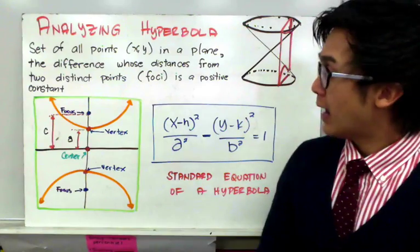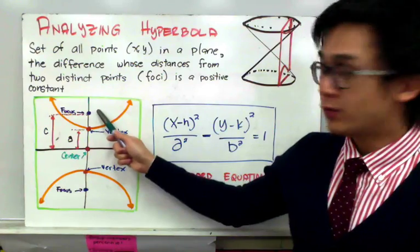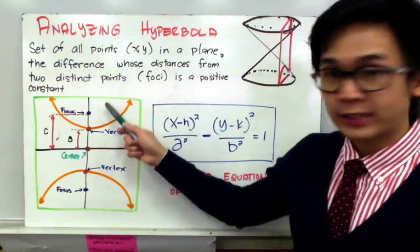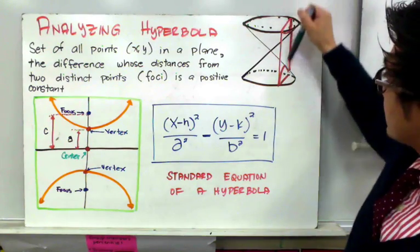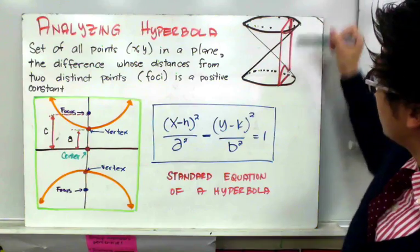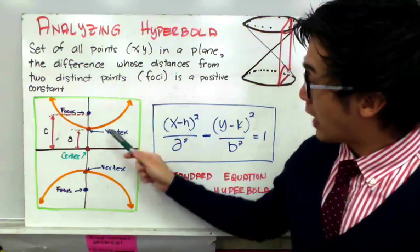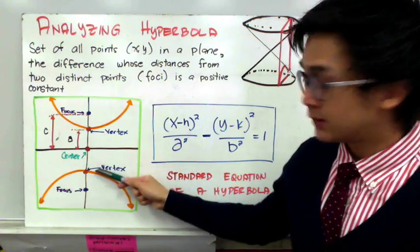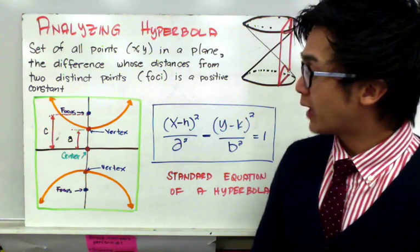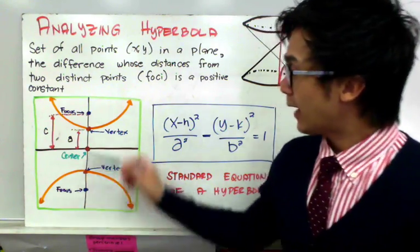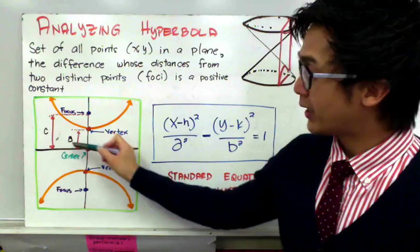In this example that I have on the board, I have a hyperbola that's opening vertically. This will be your focus, or one of the foci. We have two openings right here because the hyperbola is given by conic sections that cut through vertically, forming two hyperbolas as shown in our figure. So we have the foci, the vertices, and the center. In our formula, we're going to be finding A, B, and C — where A is the distance from the center to the vertex.